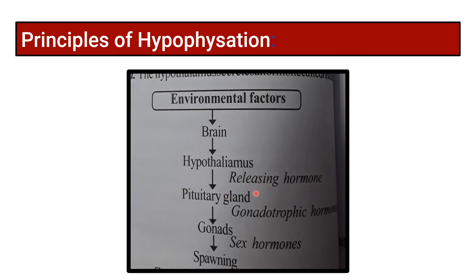The pituitary gland releases gonadotropic hormones, which stimulate the gonads. The gonads then secrete sex hormones, which result in the formation of spawning. This principle is applied in hypophysation.